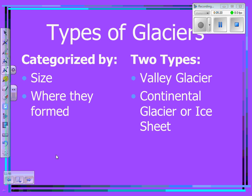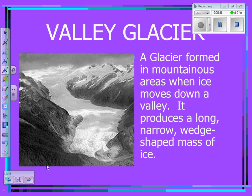Types of glaciers: there are two types, categorized by their size and where they formed. The two different types are valley glaciers — also called alpine glaciers — and continental glaciers, or ice sheets. A valley glacier is typically a singular feature formed in mountainous areas when ice moves down a valley. It typically produces a long, narrow, wedge-shaped mass of ice moving down a single valley.